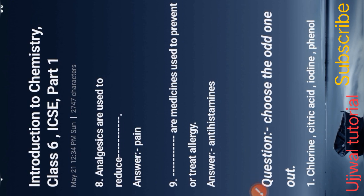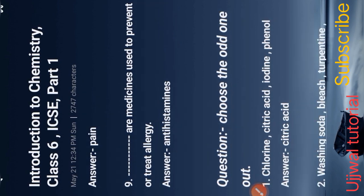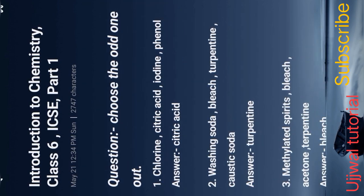Next question type: choose the odd one out. Number 1: chlorine, citric acid, iodine, phenol. Citric acid is the one type of organic acid, that is odd one out. Next: washing soda, bleach, turpentine, caustic soda. Turpentine is the difference from others.